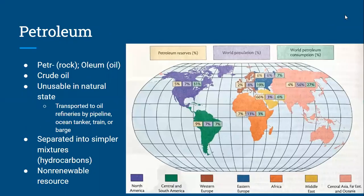First, petroleum. It comes from the words 'petra' and 'oleum' — petra meaning rock and oleum meaning oil. Another word for petroleum is crude oil. In its natural state, it's completely unusable, so we first have to transport it to an oil refinery. That can happen by train, barge, ocean tanker, or even pipeline, which has been in the news a lot lately.